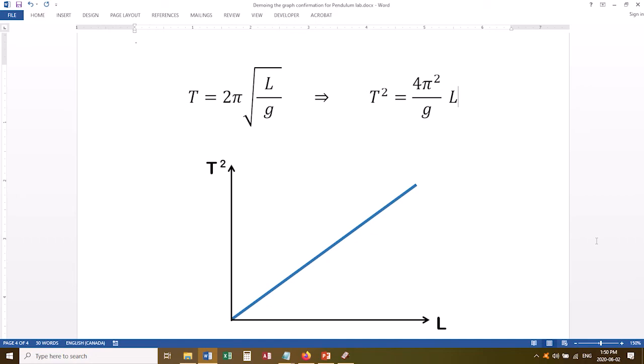The reason why we expect this to give us a straight line is because if you square both sides of the equation, you end up with this form. T squared equals 4π² over g times L. If you compare that to the equation of a straight line, y equals mx plus b, you can see that if we plot T² on the y axis and L on the x axis, the theory predicts a straight line graph where the slope equals 4π² over g and the y-intercept is predicted to be zero.